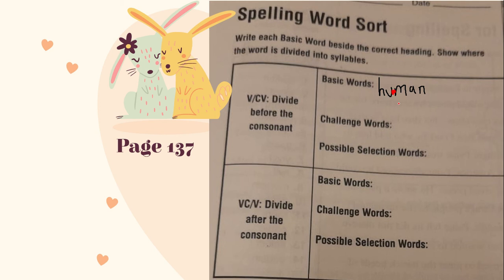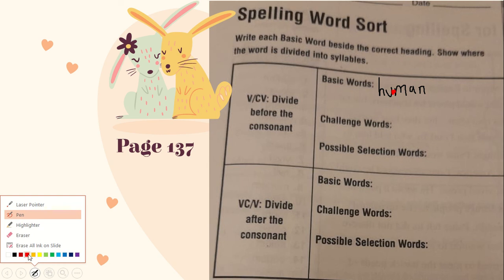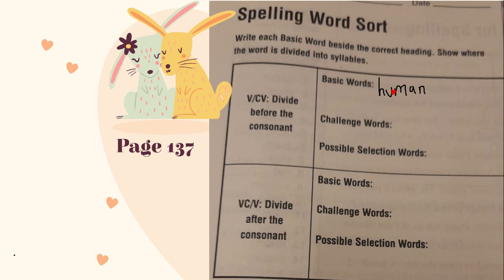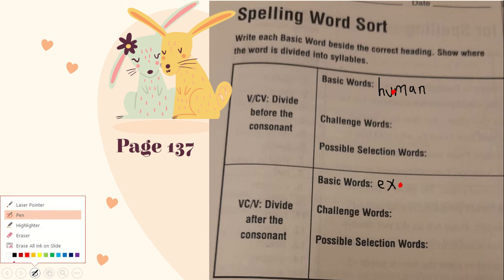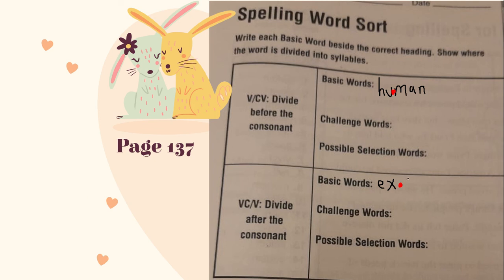Very good. Now let's write the word exact. The word exact goes on the second box where it says vowel, consonant, vowel. Let's write EX, and then we have the period where we separate the syllables — A-C-T. Exact.